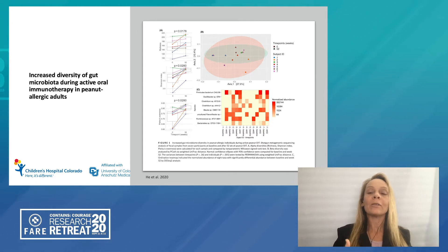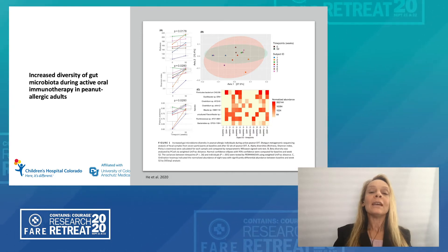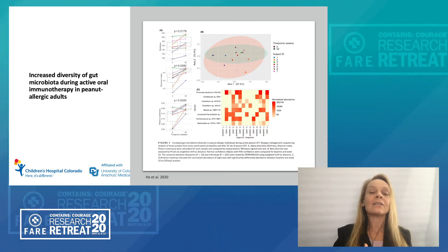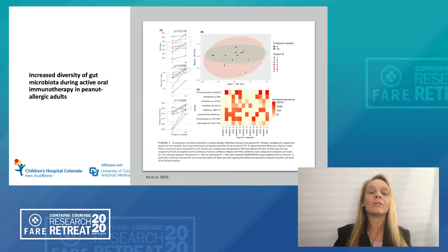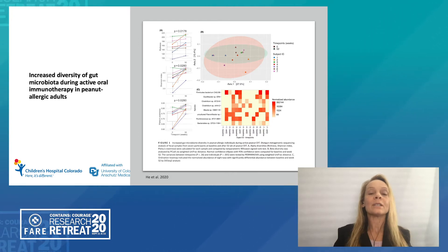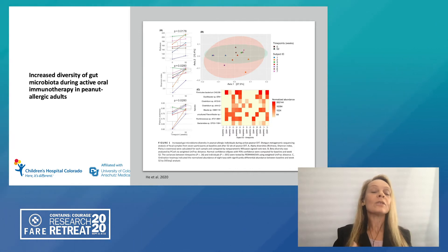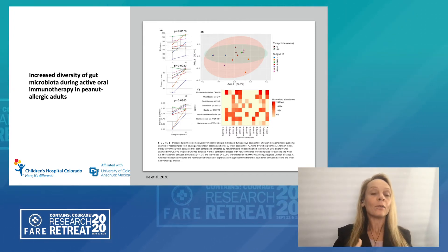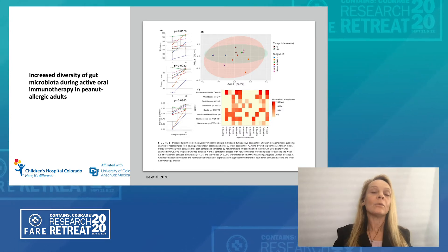Even though the numbers are very small — reporting data only on seven adults undergoing oral immunotherapy — it is very interesting to see that as these adults were undergoing oral immunotherapy, their gut microbiome changed as well. There was an increase seen in the richness in figure A at the top, and also in terms of the Shannon index, which is the microbial diversity measured in these adults. So we also need to learn more about how the microbiome responds to the different treatment methods currently used in children and adults with food allergy.